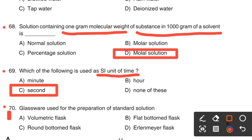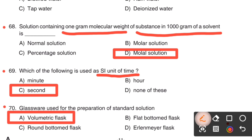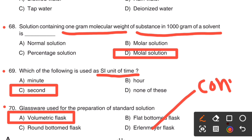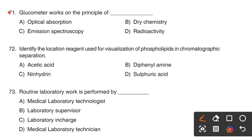The right answer is Option A, Volumetric flask. There may be a chance of being confused with Erlenmeyer flask. Erlenmeyer flask is a conical flask, so don't be confused.